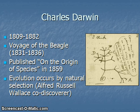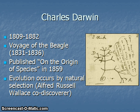Let's discuss a little bit more about Charles Darwin. Darwin was born in 1809 and died in 1882. The major event in Charles's life was the Voyage of the Beagle — a voyage he made on a ship called the Beagle, which lasted from 1831 through 1836.